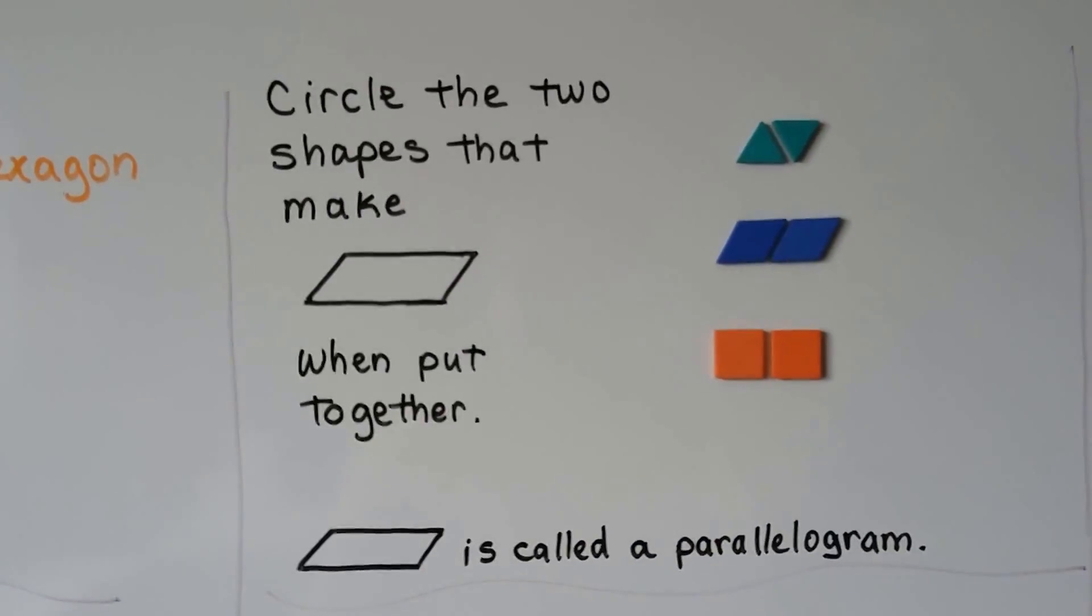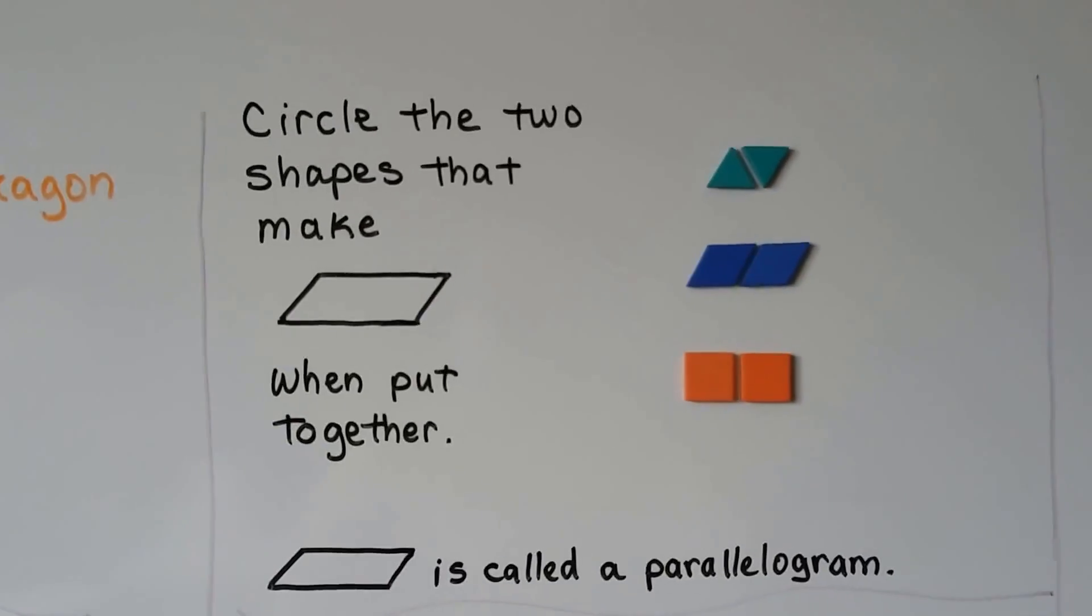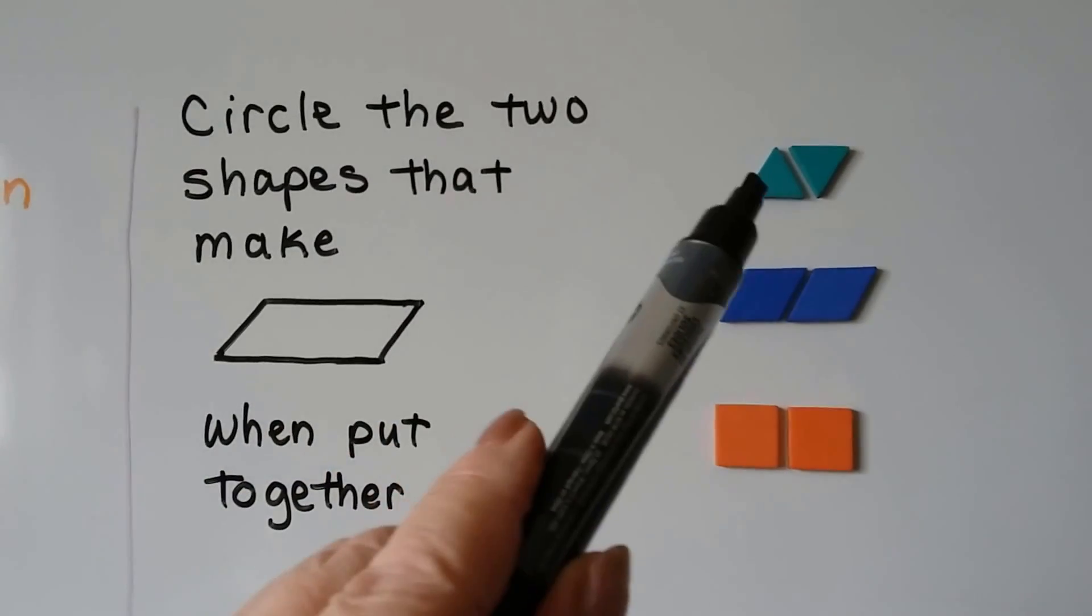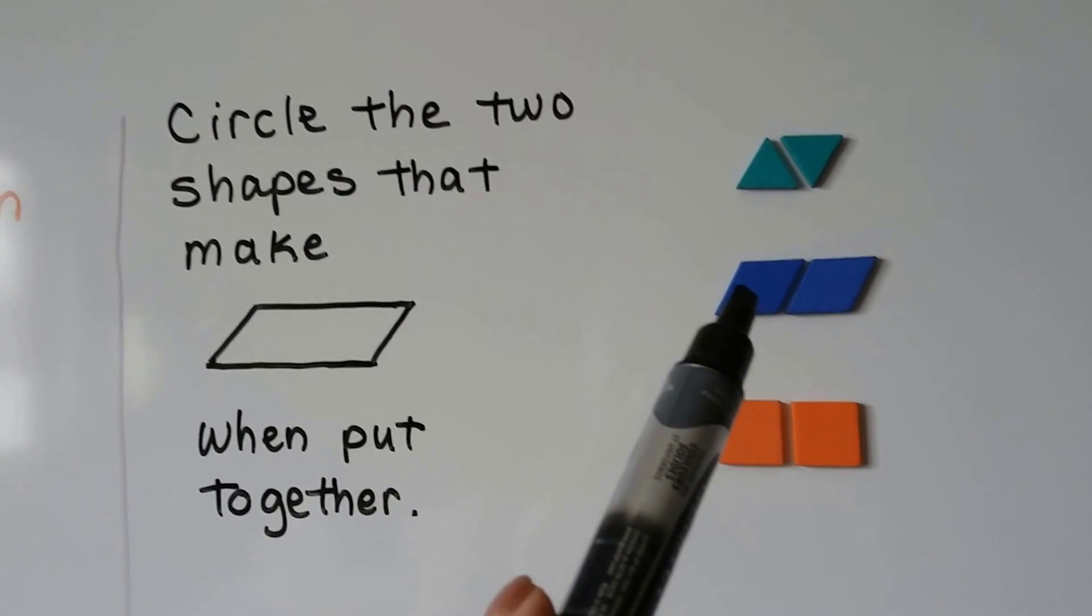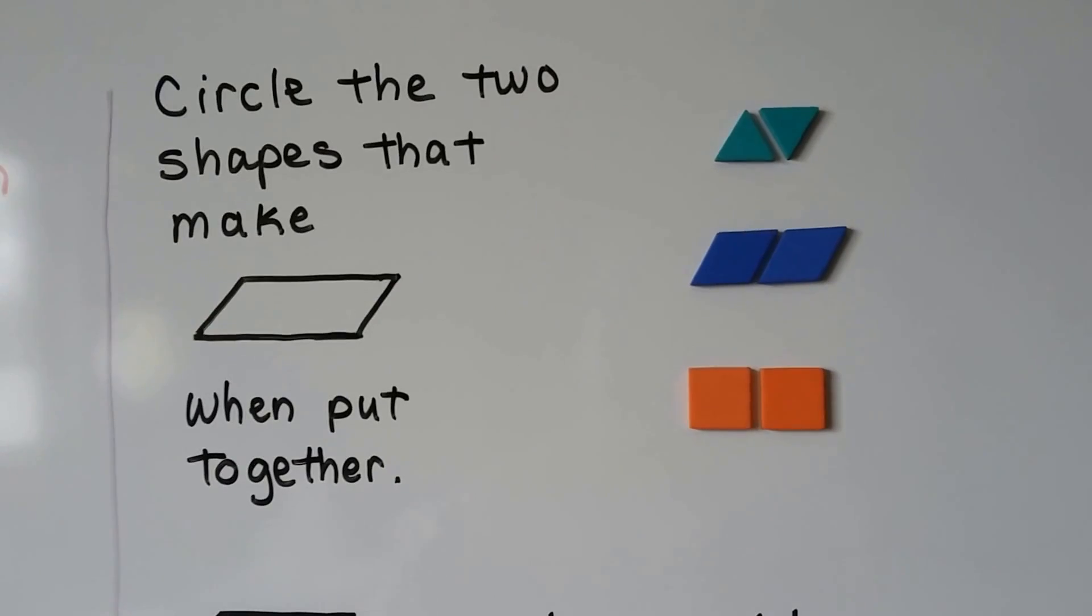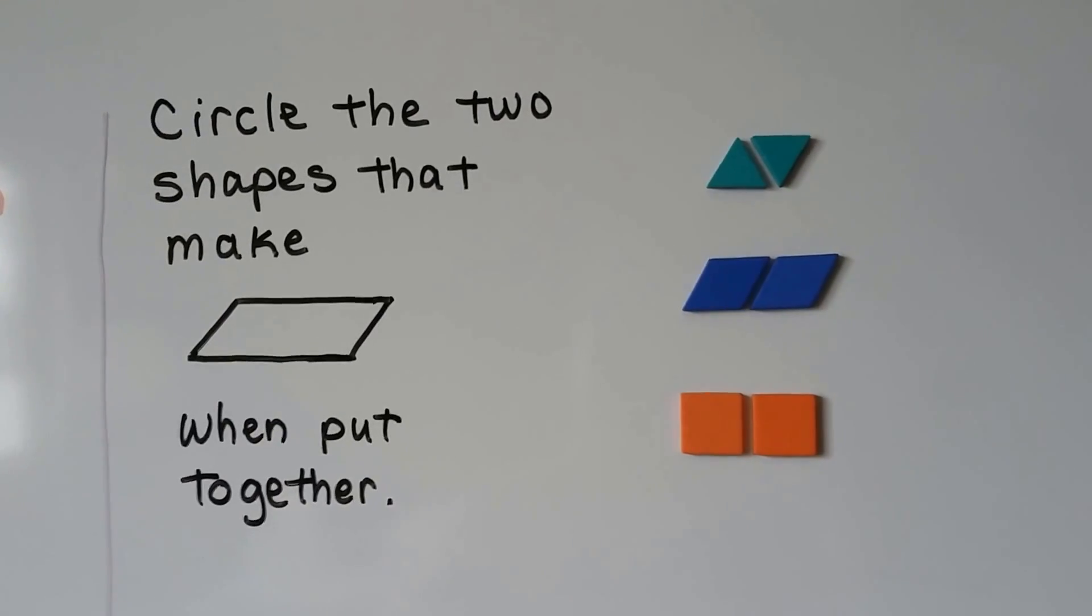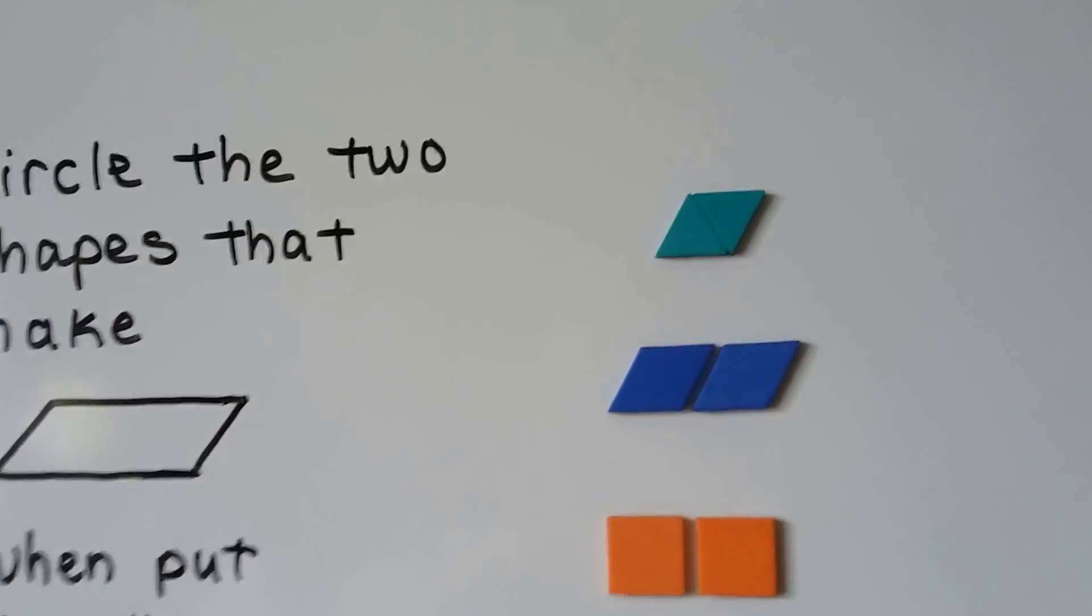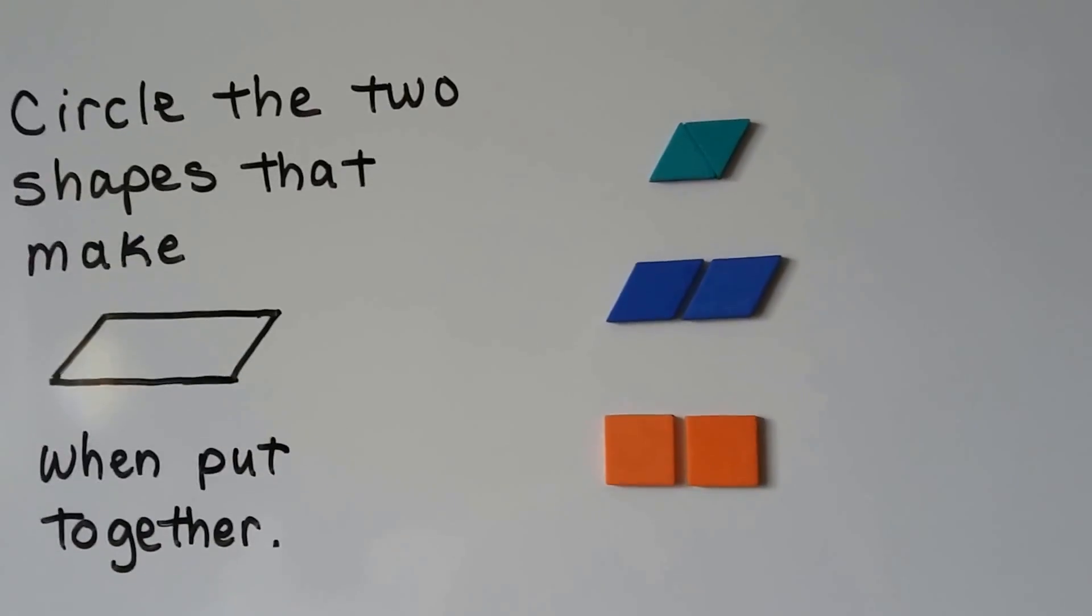And then circle the two shapes that make this shape when put together. So which of these two shapes, a triangle and a triangle, or would it be these two, a rhombus and a rhombus, or would it be a square and a square, that when they're put together, they would make this shape? Well, when we put the two triangles together, it's not long like this one, is it? It just makes a rhombus.